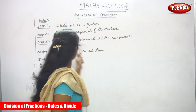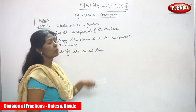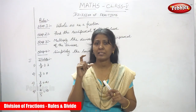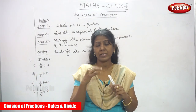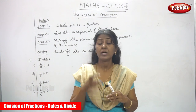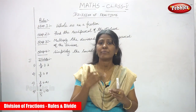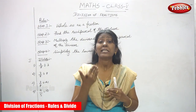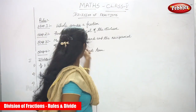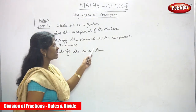Step two: find the reciprocal of the divisor. You have to find which is the divisor in the sum, and then reciprocate the divisor — that is the second step.